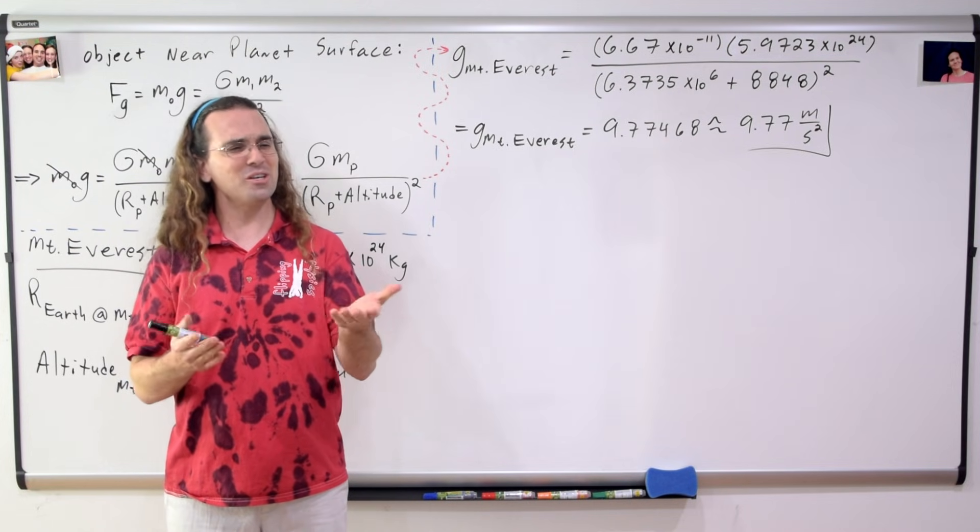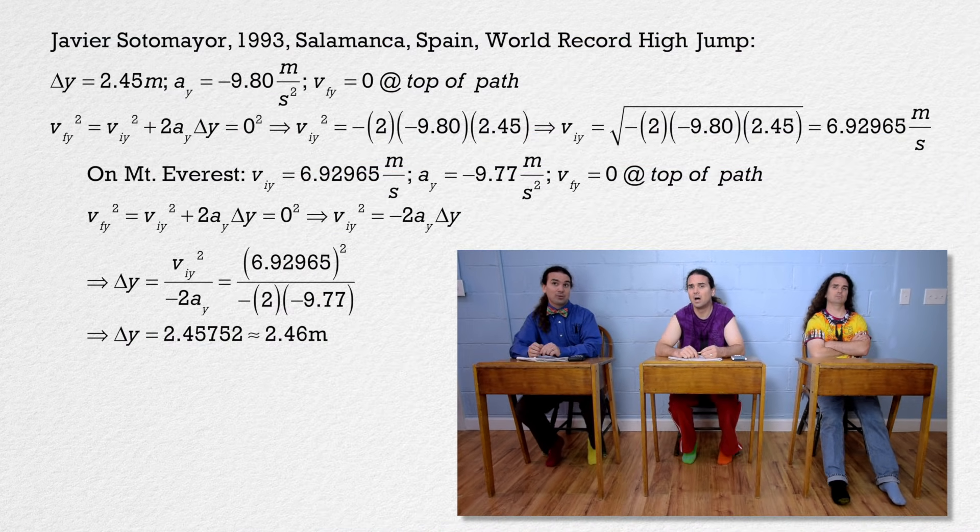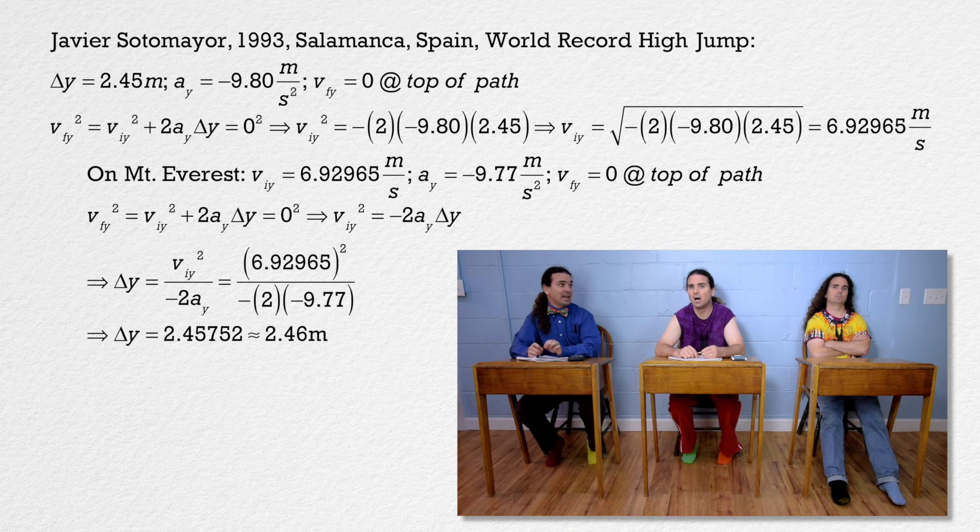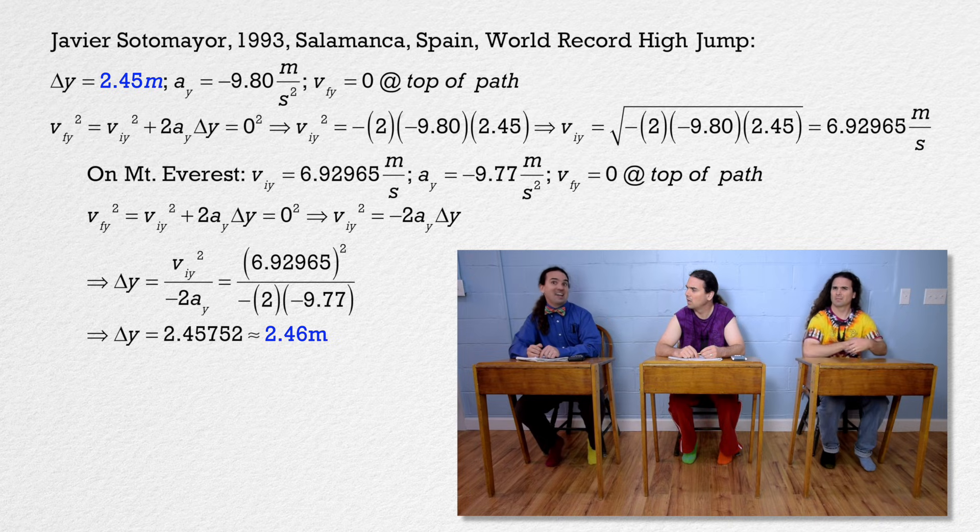Billy, what are you doing? Okay, Javier Sotomayor is the men's world record holder for the high jump. In 1993, in Salamanca, Spain, he cleared a height of 2.45 meters. The acceleration due to gravity there is 9.80 meters per second squared. If he performed the same jump instead at the top of Mount Everest, he would have been able to clear 2.46 meters instead. That is roughly one centimeter higher.